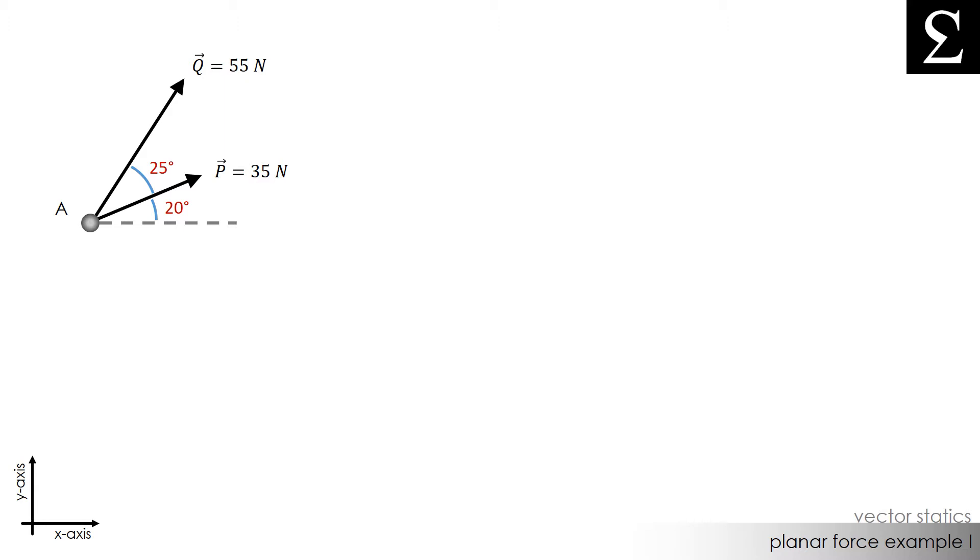In total, vector Q is 45 degrees above the horizontal, right? It's 20 plus 25 degrees. The question here is what is the resultant of forces P and Q acting on this particle A? In other words, what is P plus Q?